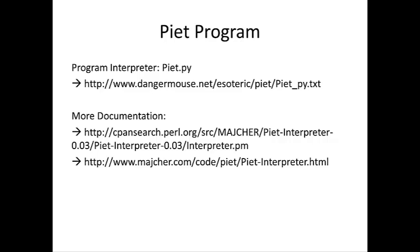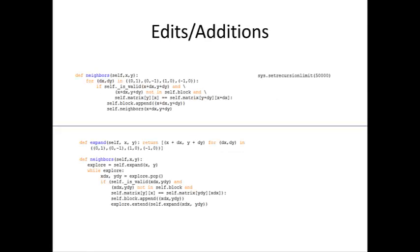You can use the first link to find the Python code of the PEAT interpreter that I used to run the programs. Also, you can find more documentation on the interpreter program with the last two links. The neighbors function on top is currently in the PEAT interpreter. I found that because this method is recursive, it may require the addition of the set recursion limit function. The code in the upper right-hand side increases the recursion limit to 50,000. This is necessary because Python has a recursion limit, and if we do not add this piece of code, the program will crash.